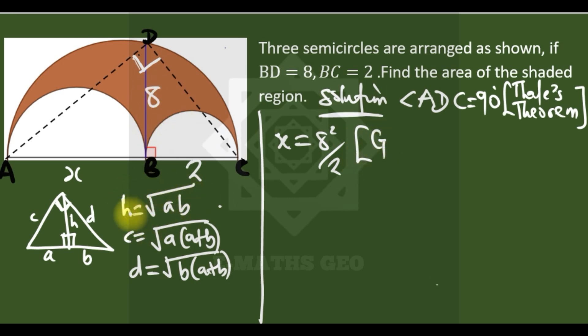h here is 8, so square both sides. So it's 8 squared. We are looking for x, so it's x squared over 2. Based on geometric mean of triangle, this is 64 over 2, which is 32. So x is 32.